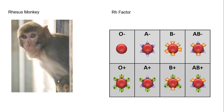He also discovered the RH factor in rhesus monkeys. That's why RH factor is the positive and the negative. O, A, B, and AB — that's all one thing, and then the RH factor is another thing. They're both different types of antigens on red blood cells. And he figured out that if you're O negative, you're good to go — you can give your blood to anybody because your red blood cells don't have anything on them, so it doesn't matter what type of antibodies they have in their blood.